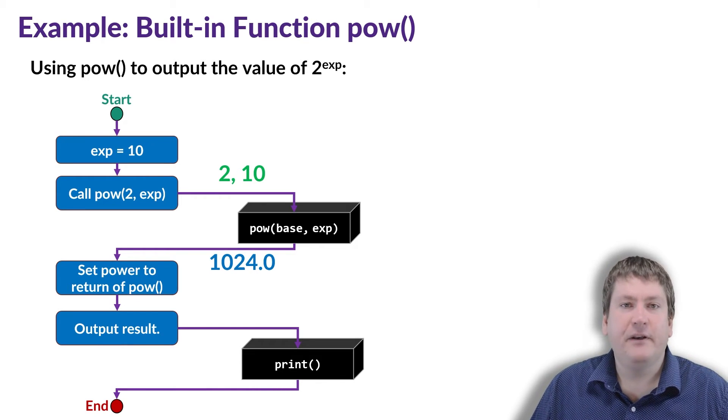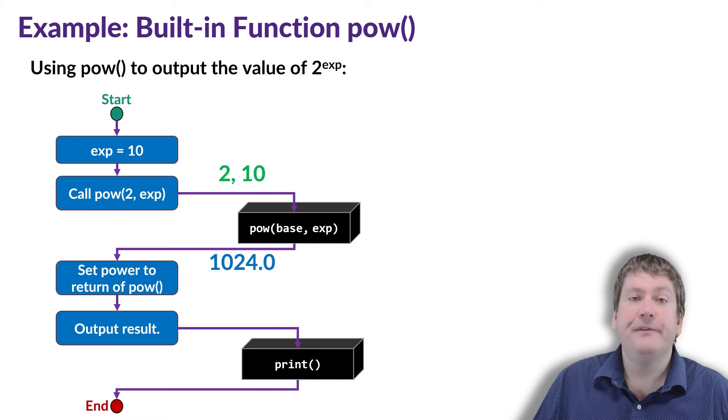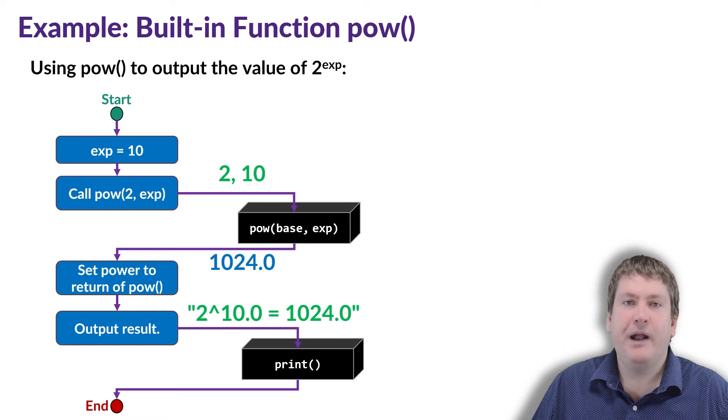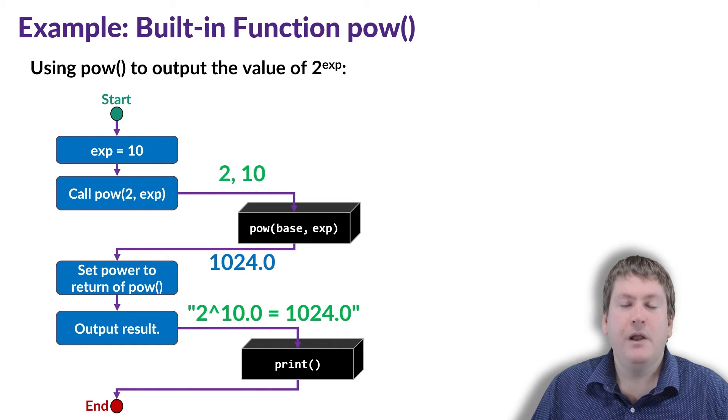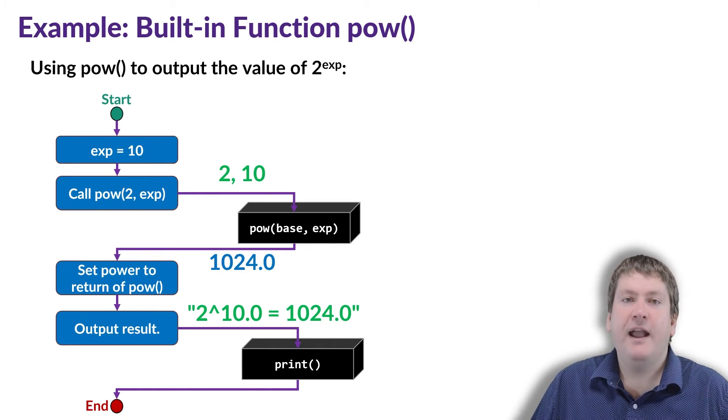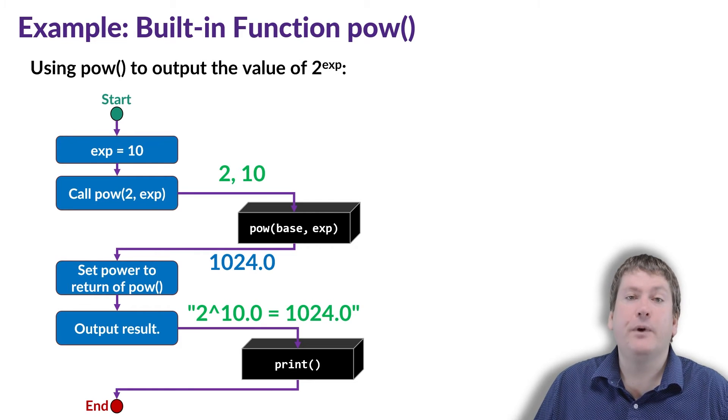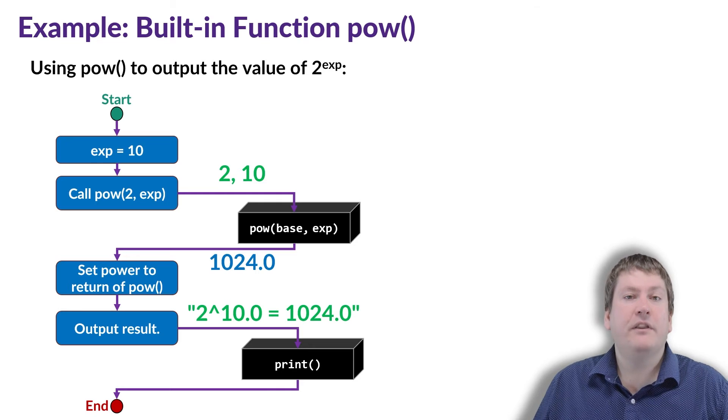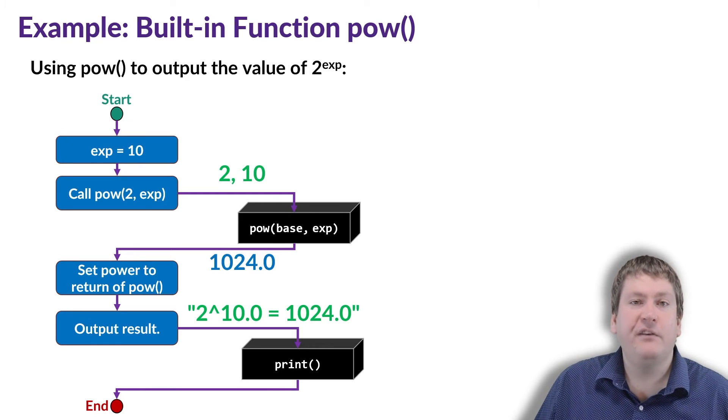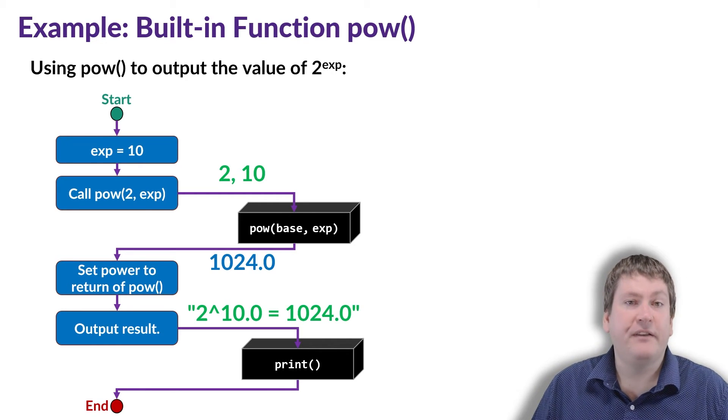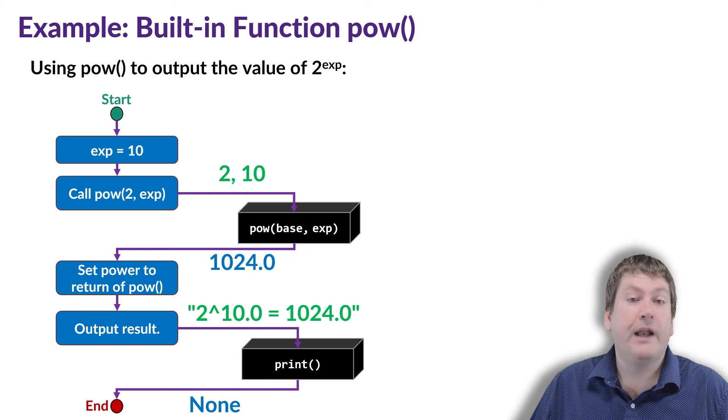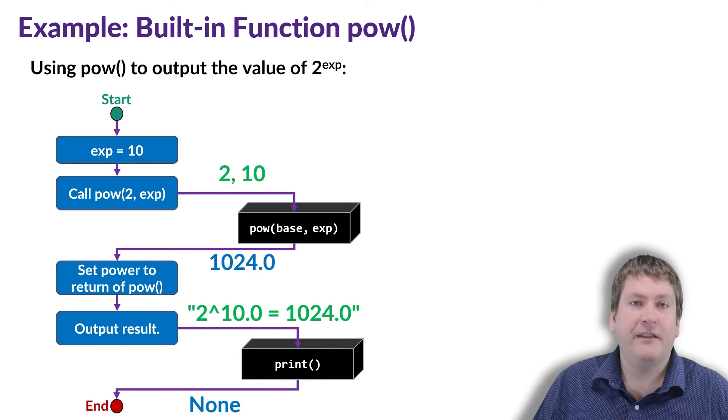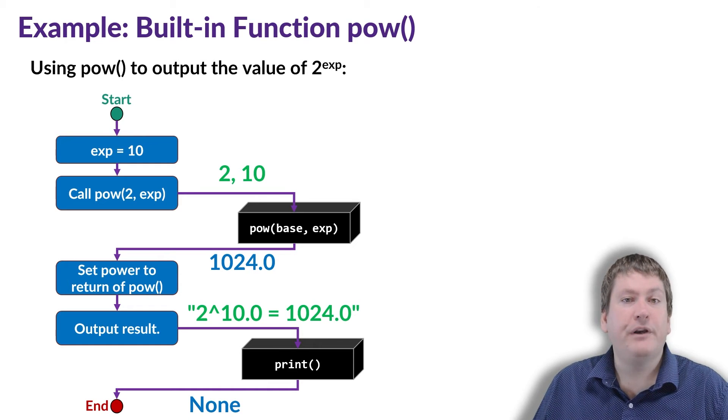Then one of the last lines in our program outputs the result using the print function. In this case, it sends the string "2 to the power of 10 equals 1024.0" to the print function as an argument, and this is what the print function is going to output to the console. But keep in mind the concept of what it outputs to the console and what a function returns is different. So the print function would actually return nothing. It doesn't have a return in terms of what it sends back to the code. It only has an output to the console.